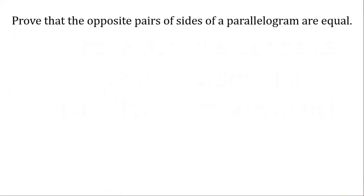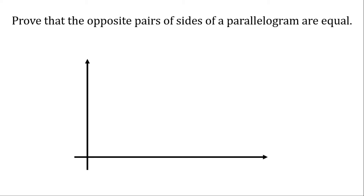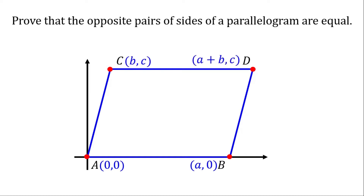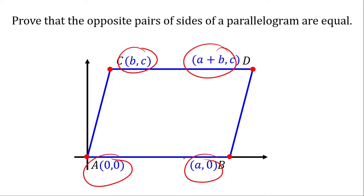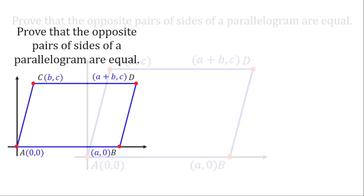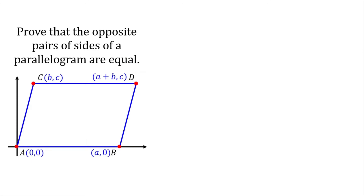First, all we need to do to prove this is to create a Cartesian plane and then put a parallelogram on it. Now let's put on some of the vertices. If you recall how to place the coordinates of the vertices, please go to the video tutorial I created before this video, where you'll learn how to fix figures in the coordinate plane. At this point, all we need to do is prove that the opposite sides of this parallelogram are equal.